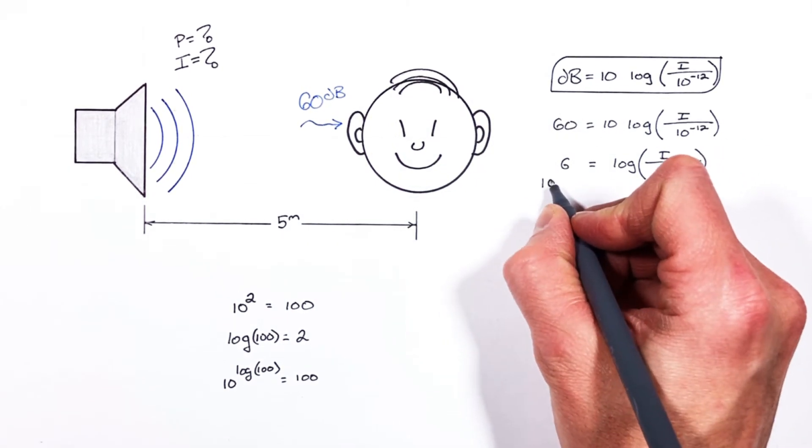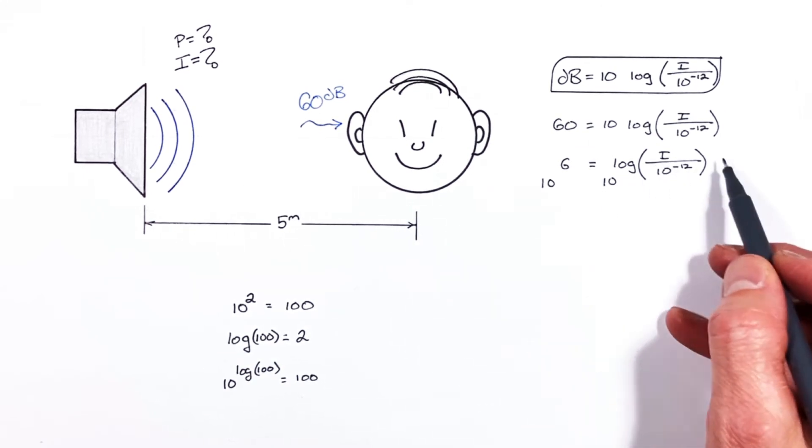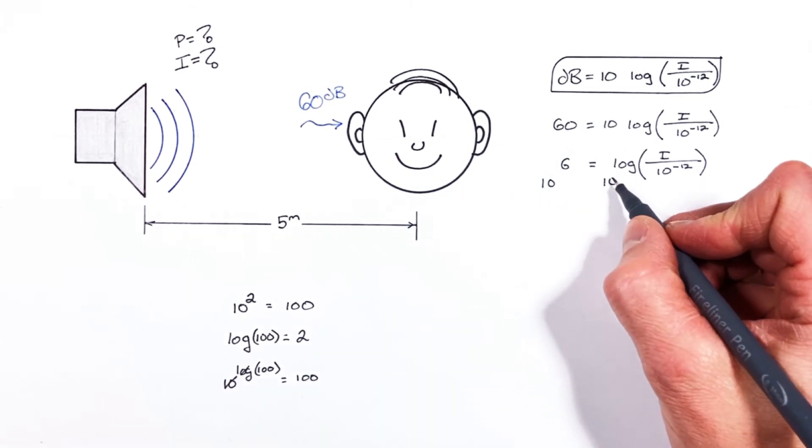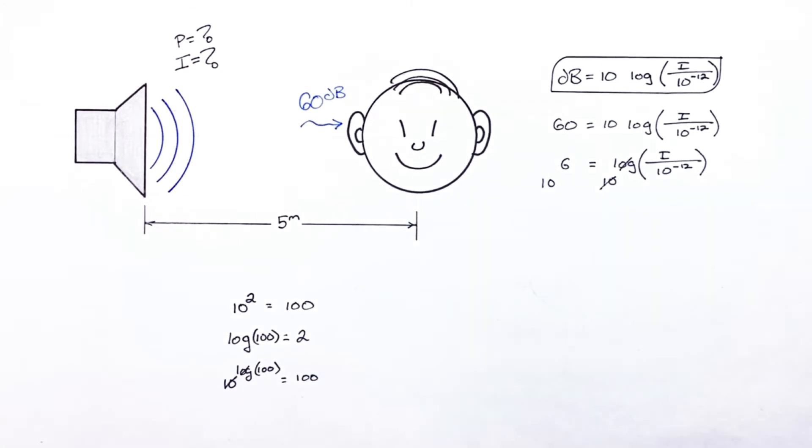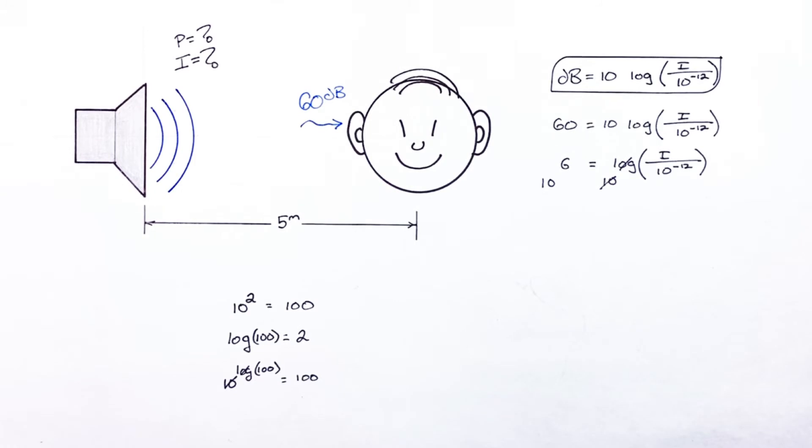If I do 10 to each side of the equal sign here, 10 to the 6th is going to be equal to 10 to all of this. And just like 10 and the log canceled each other out here, 10 to the log of something cancel each other out and we're left with 10 to the 6th is equal to the intensity which we're solving for divided by 10 to the negative 12th.